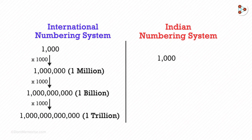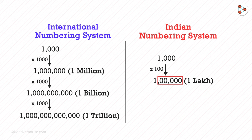In the Indian numbering system, let us start with 1,000. 1,000 multiplied by 100 gives us 1 lakh, which has 5 zeros. And 1 lakh multiplied by 100 gives us 1 crore, which has 7 zeros.